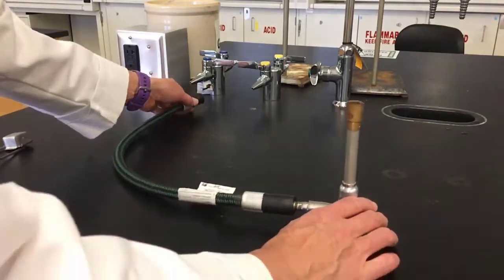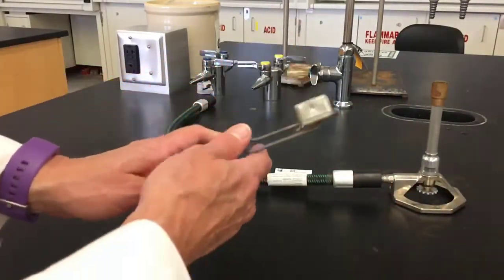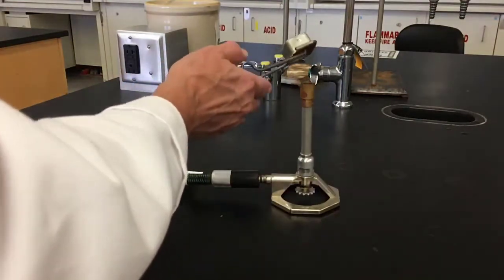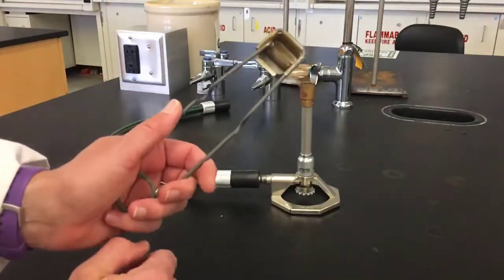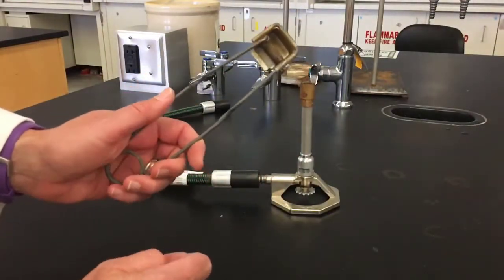Before I actually hook up the hose to the gas jet, I want to practice with the striker. The striker is how we're going to light the Bunsen burner flame, and you need to be able to make a spark.